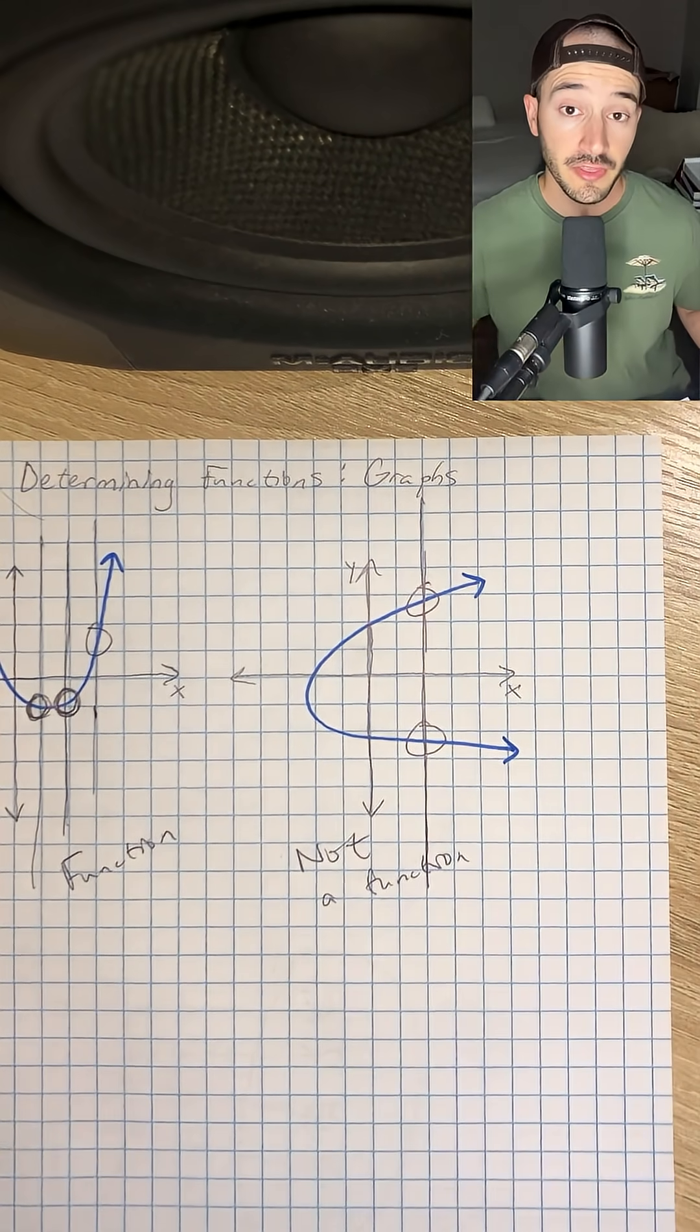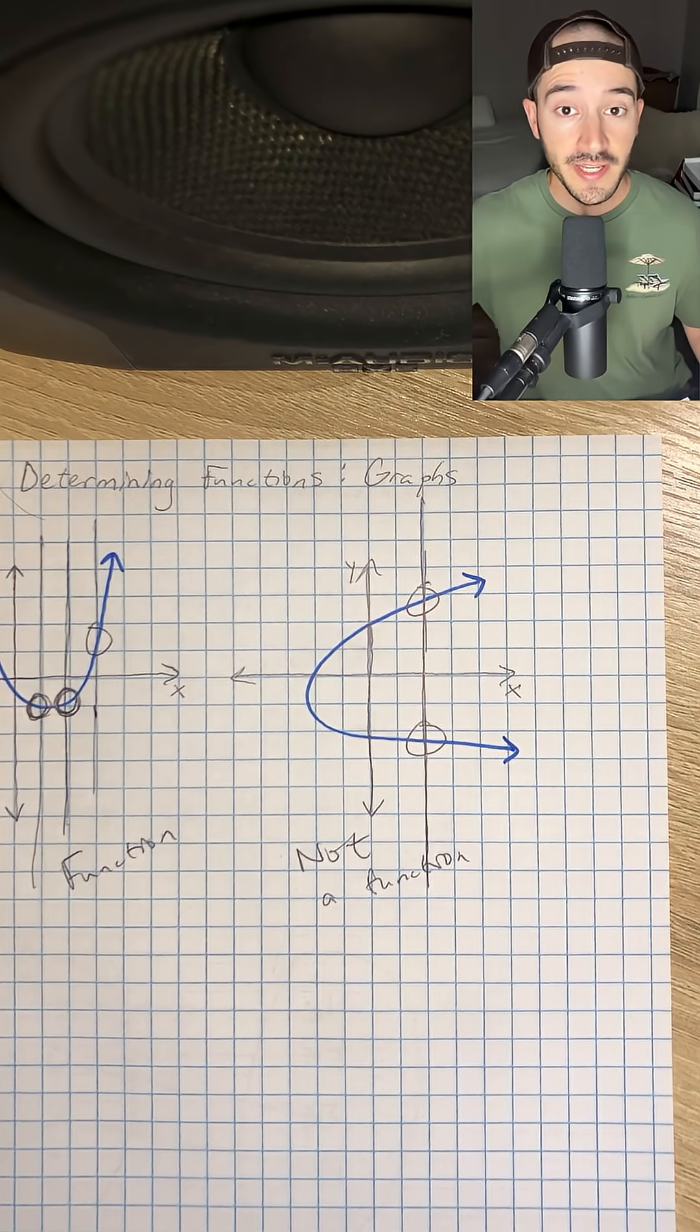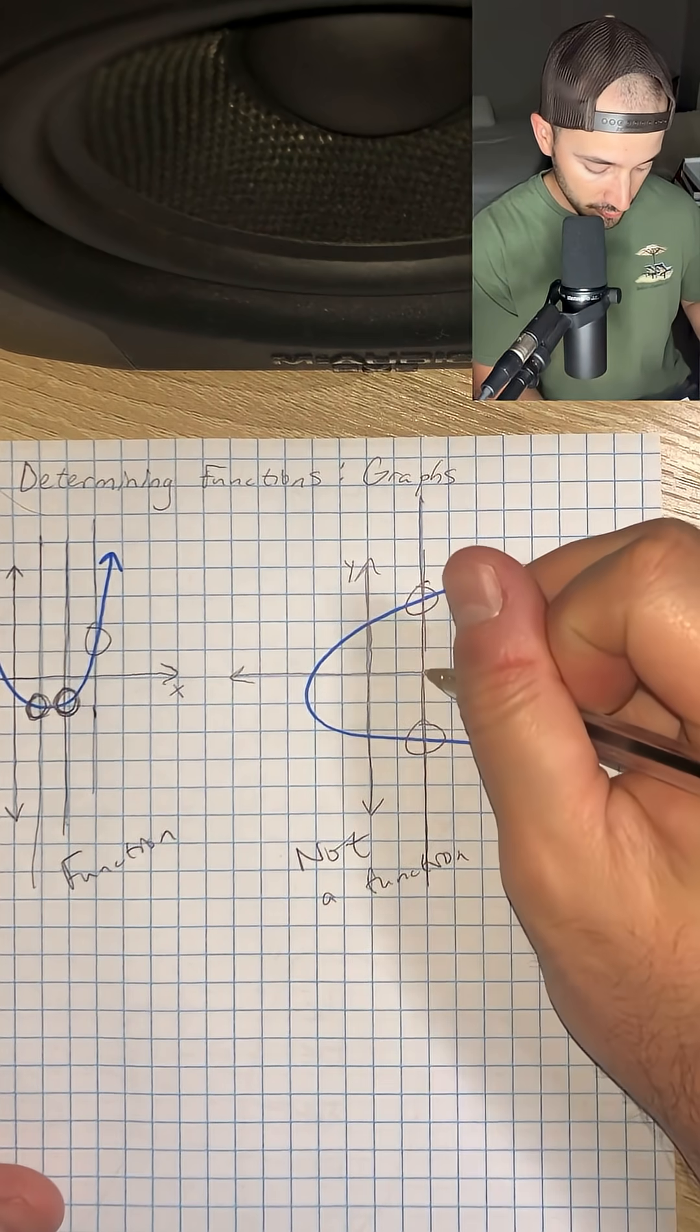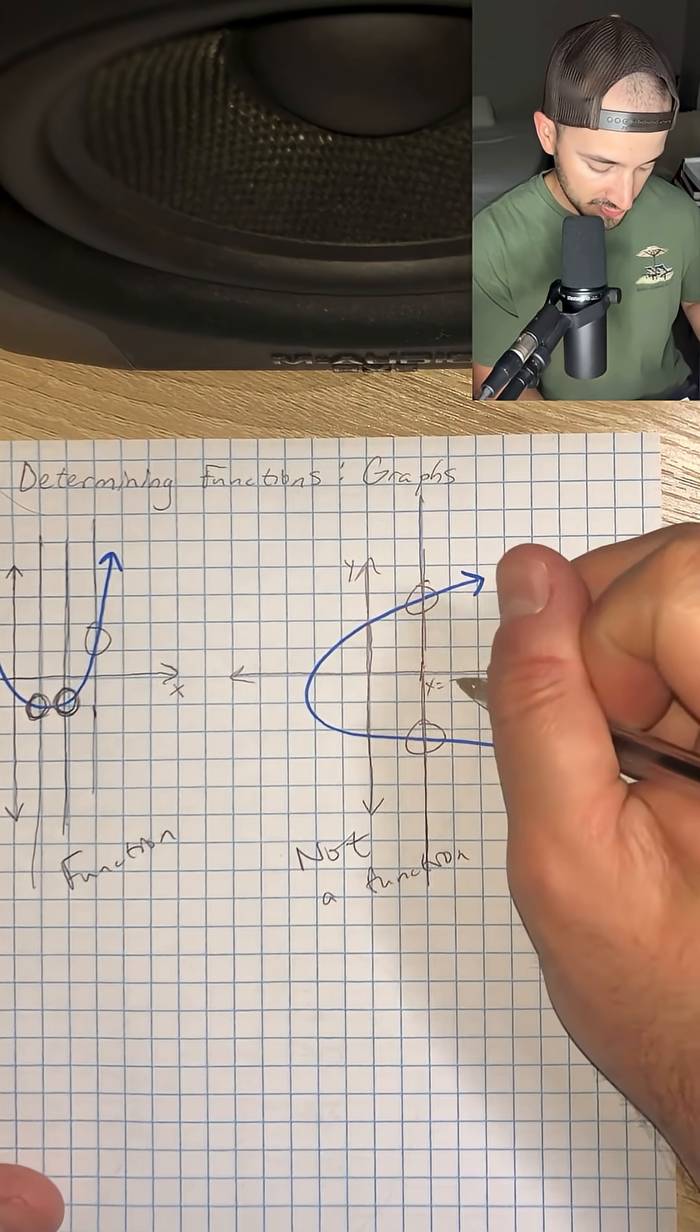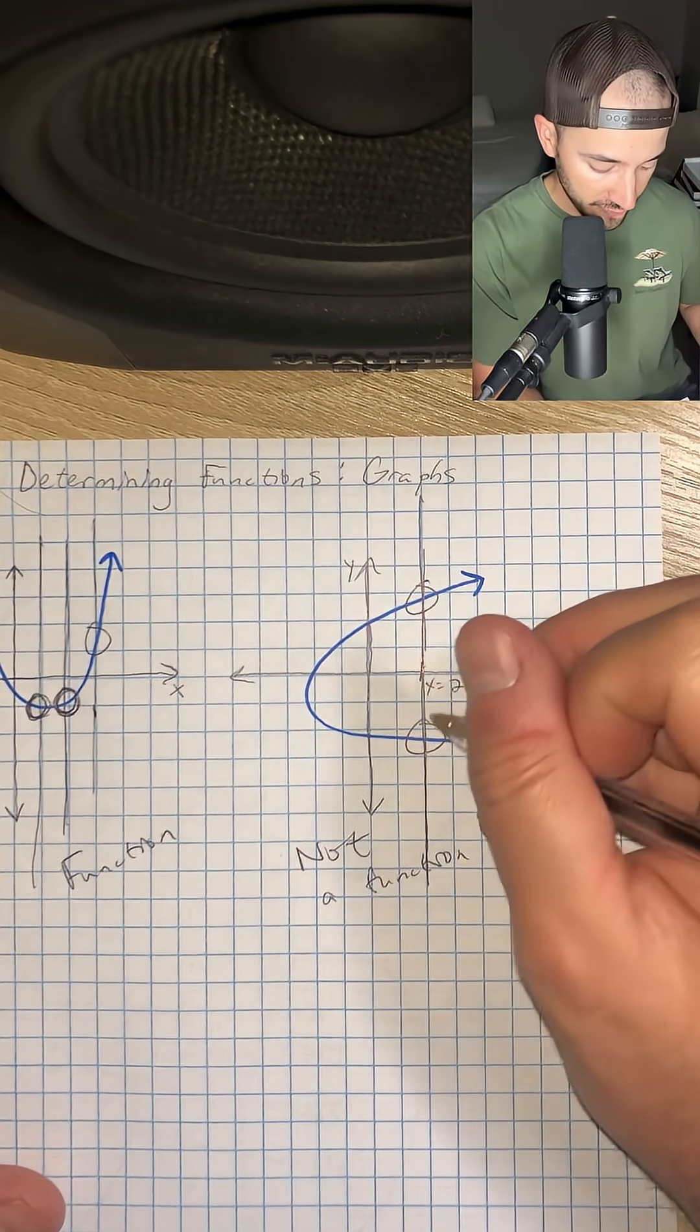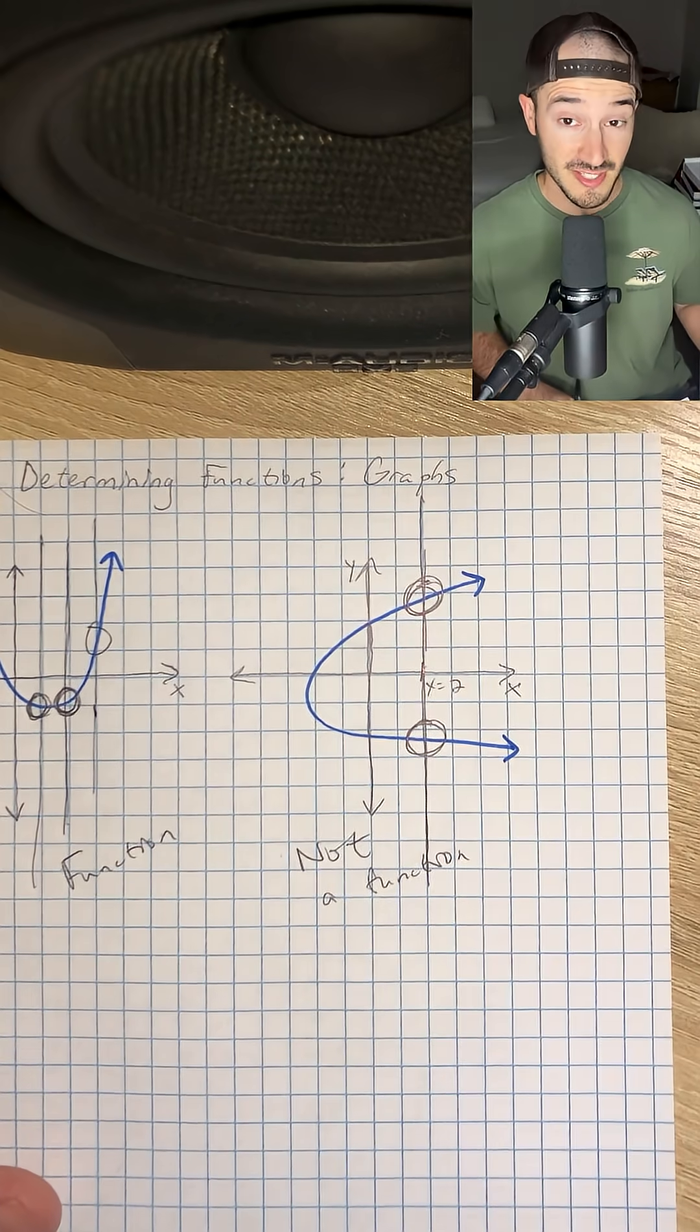Because remember, the definition of a function is that each input only has one output. And at x equals 2, this is x equals 2, we have two outputs. We have two y values, one right here and one right there. So that is not a function.